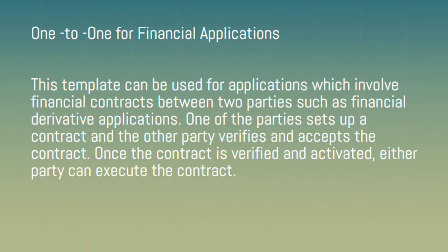One to one for financial applications: These templates can be used for applications which involve financial contracts between two parties, such as financial derivative applications. One of the parties sets up a contract and the other party verifies and accepts it. Once verified and activated, either party can execute the contract. Separate trading accounts are created for each party, backed by a smart contract, and each party maintains a sufficient balance to facilitate payments. Separate smart contracts are used for different financial applications such as financial derivative instruments.